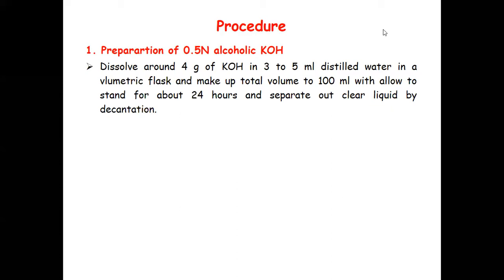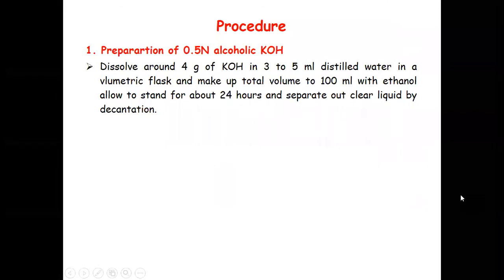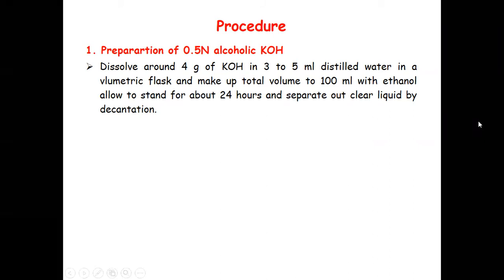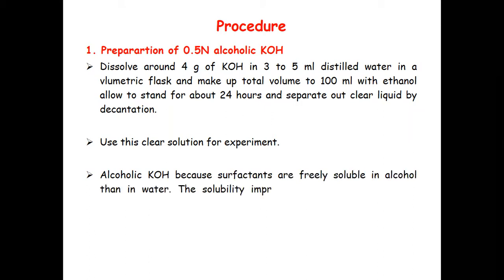You have to take 4 grams of KOH, add 3 to 5 ml of distilled water, mix well, and then make the volume up to 100 ml with ethanol — this is your alcoholic KOH. Keep it aside for 24 hours, then separate the clear liquid by decantation for use in the experiment. Alcoholic KOH is prepared because surfactants are more freely soluble in alcohol than in water, improving solubility and making hydrolysis more effective.